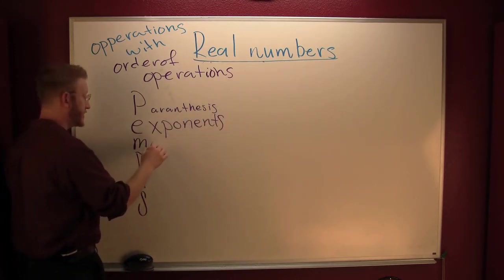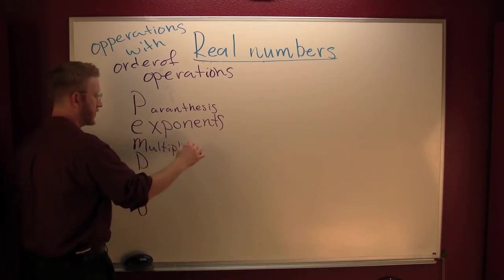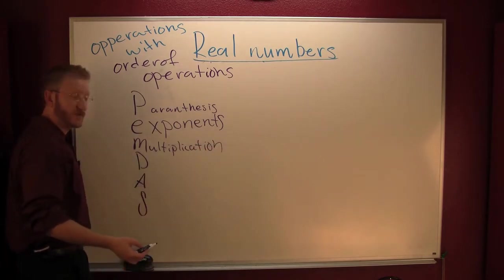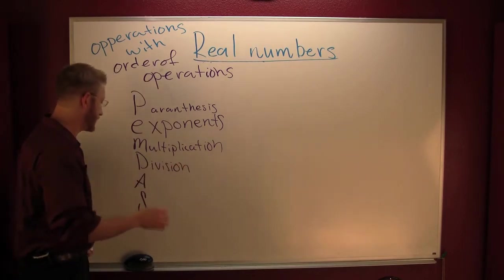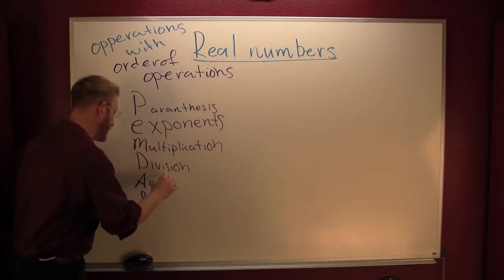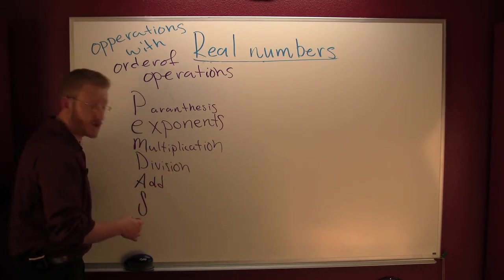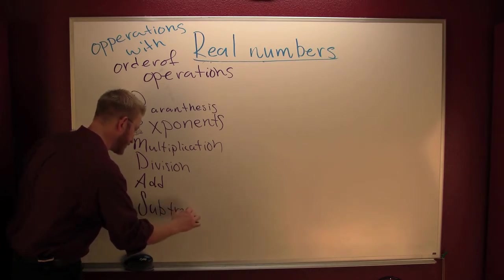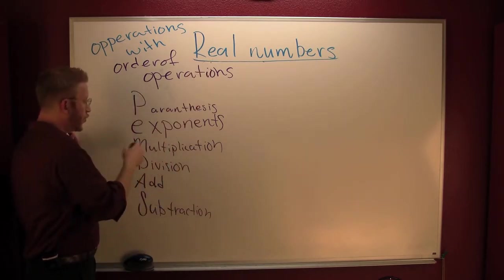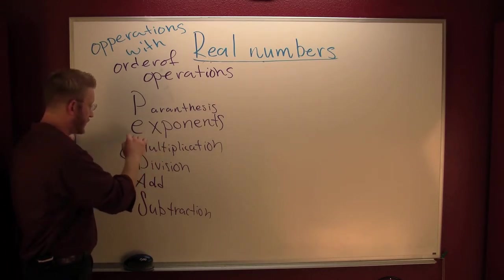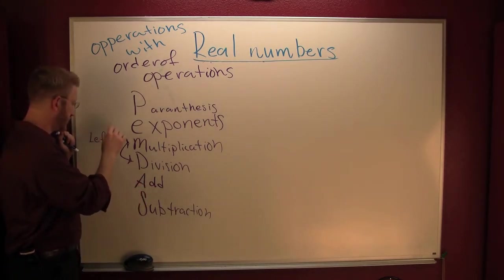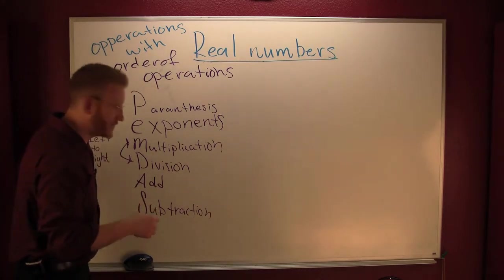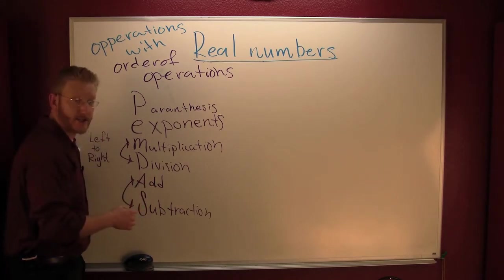The M stands for multiplication, the D stands for division, the A stands for addition, and the S stands for subtraction. When you have M and D grouped together, they go from left to right. Same with A and S — addition and subtraction also go from left to right.